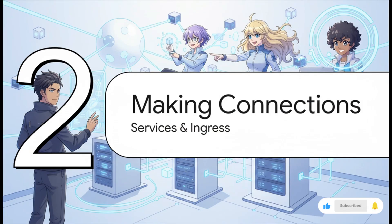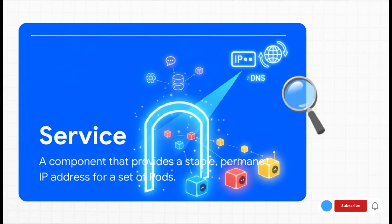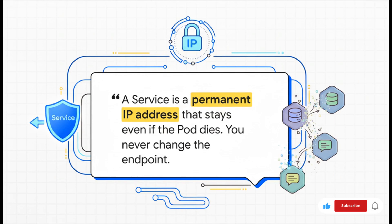That brings us to our next tool: an object called a service. A service is like a permanent frontman for a group of pods. It gives them a single stable IP address and a predictable name — something like 'my-database'. Other parts of your app don't need to know about the individual pods that are always changing. They just talk to the stable service, and the service handles routing the traffic to a healthy pod behind the scenes. The pods in the background can come and go, but their public mailing address — the service — never changes.